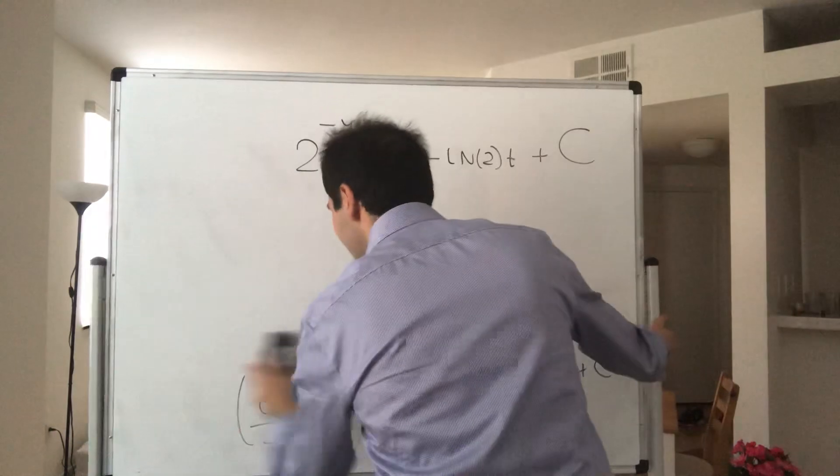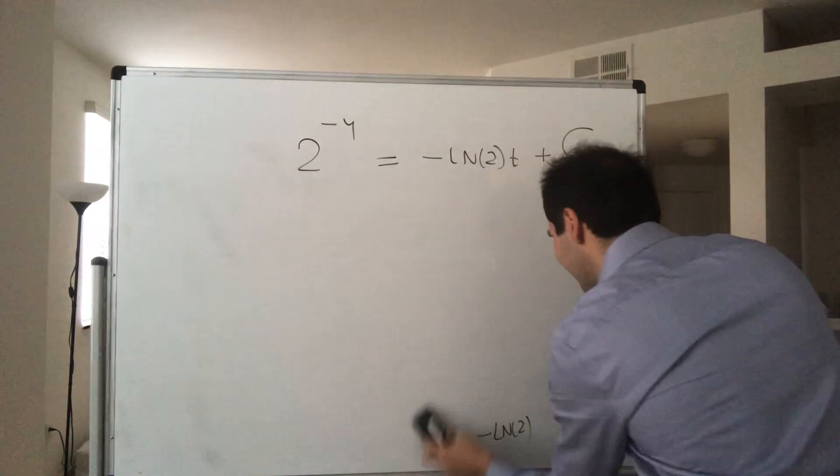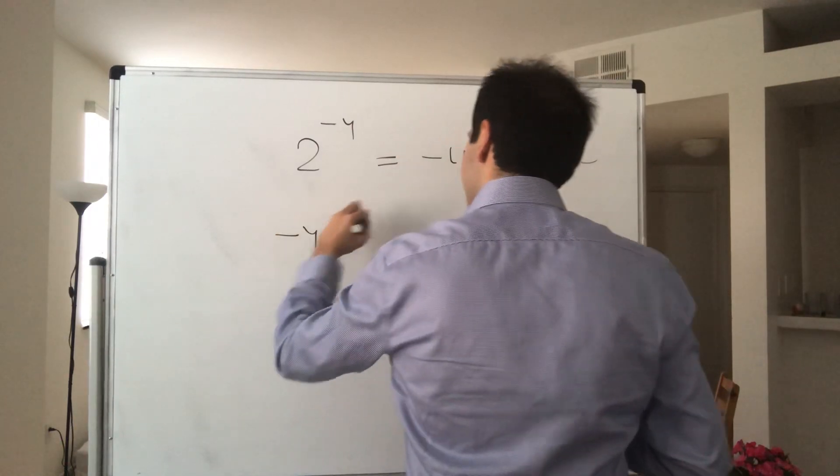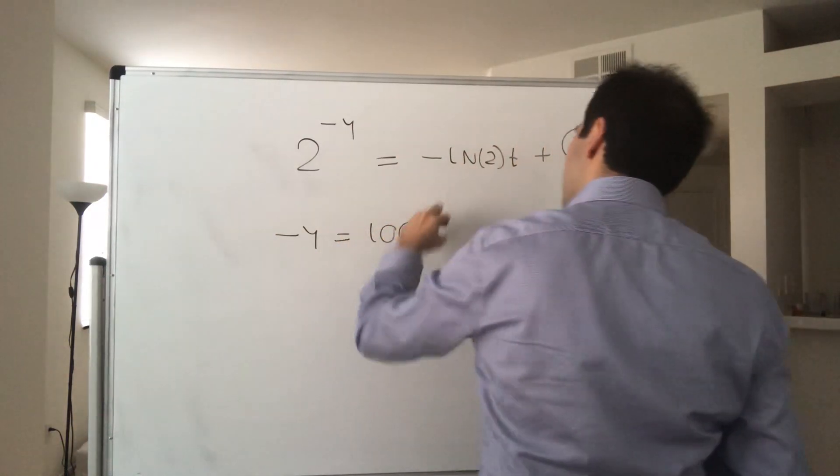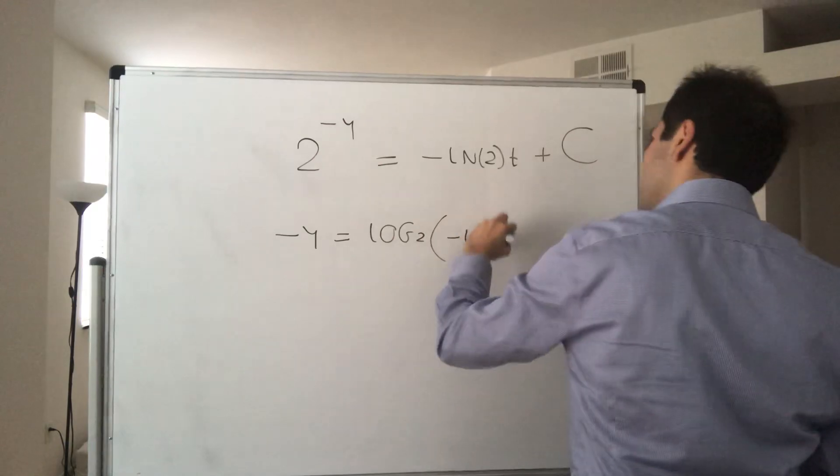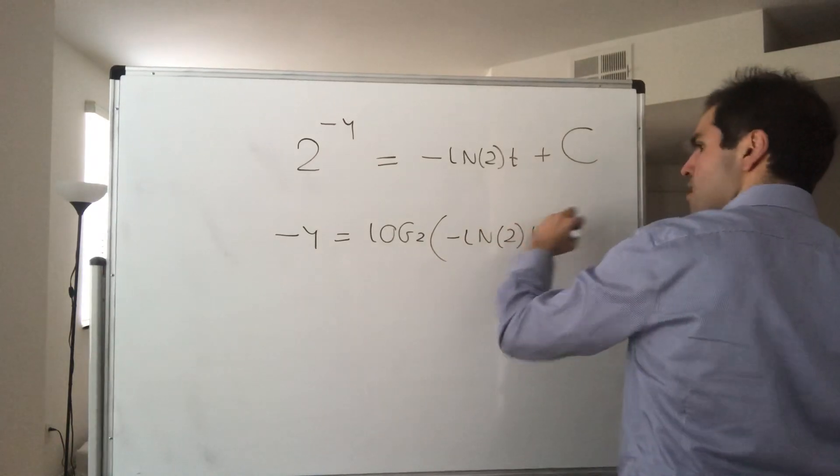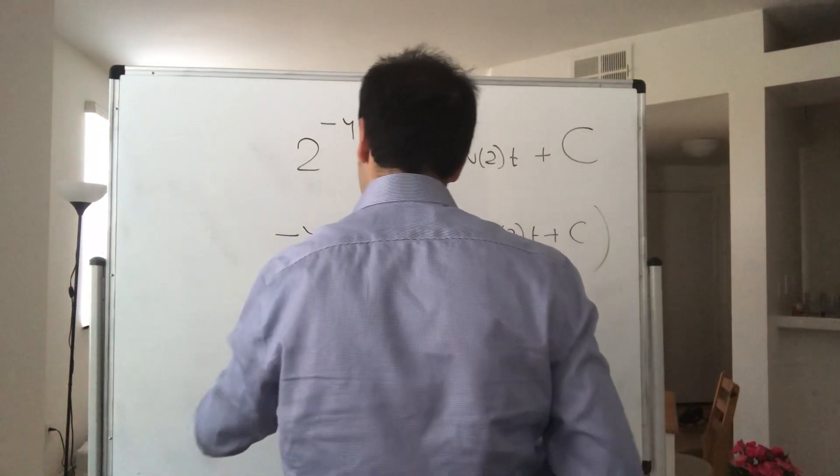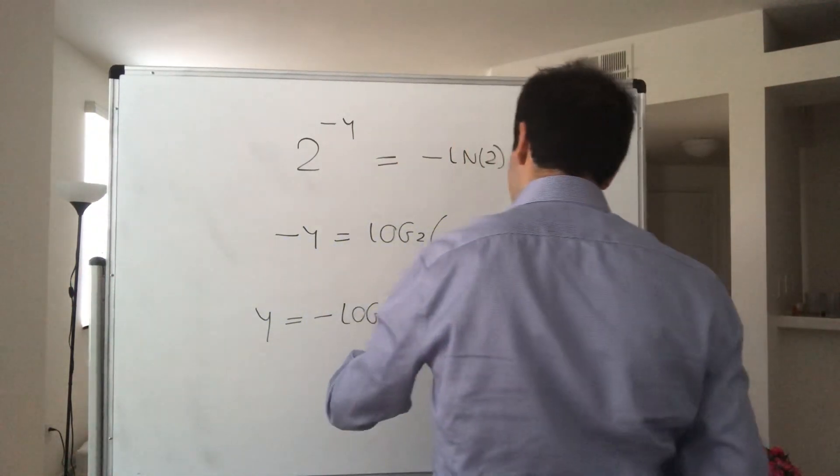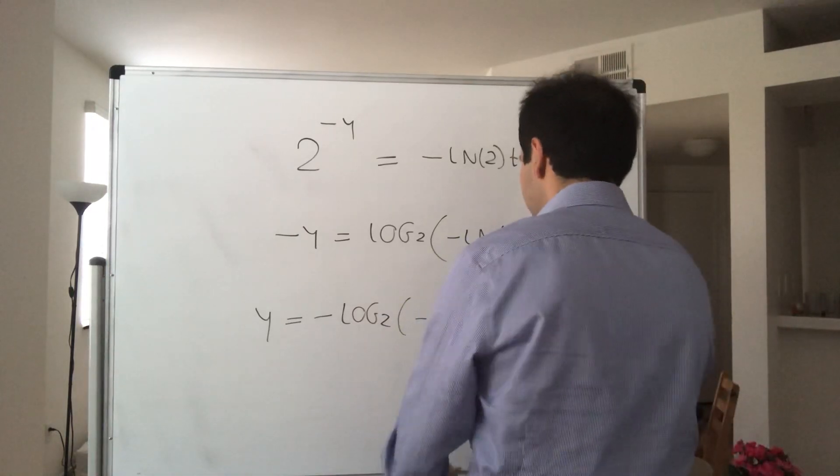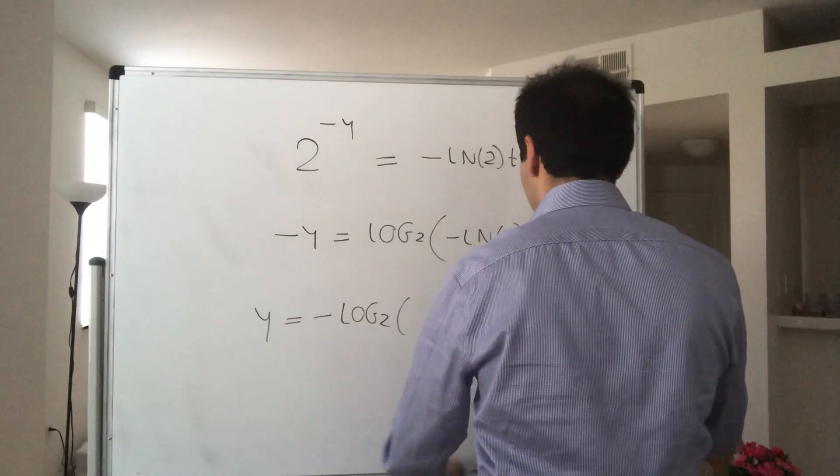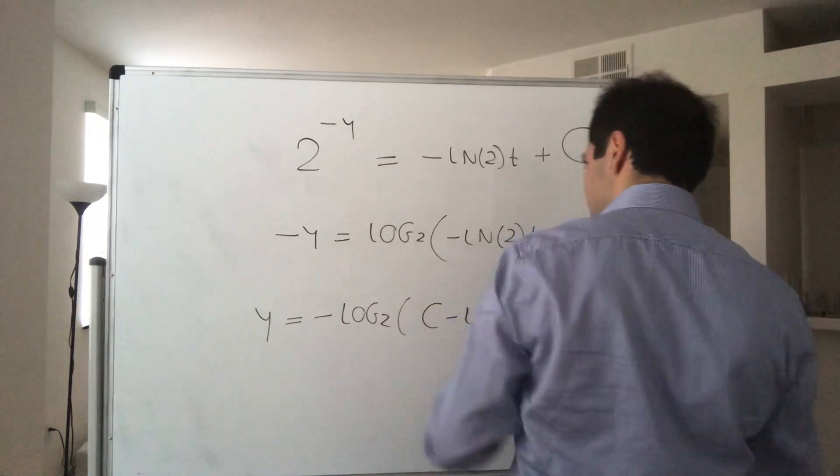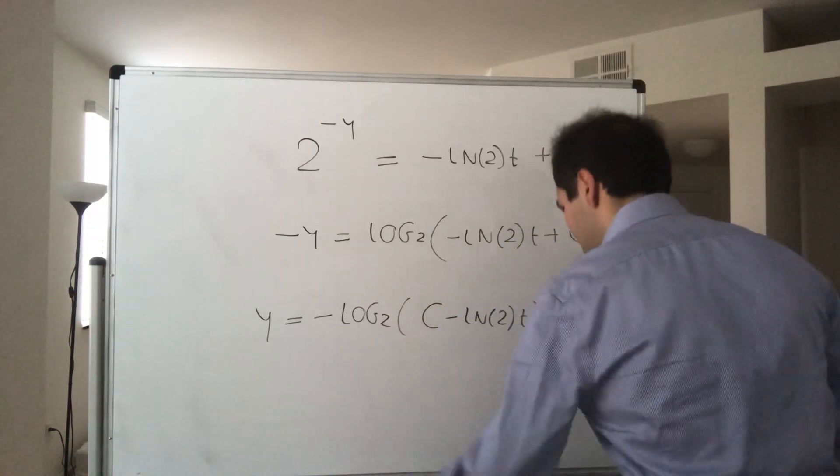Let's use log base two. What we get is minus y equals log base two of minus ln of two t plus a constant. So y becomes minus log base two of c minus ln of two t. Interesting.